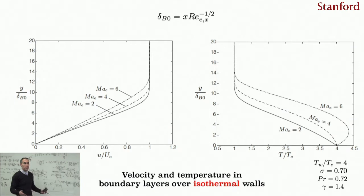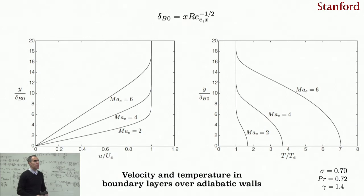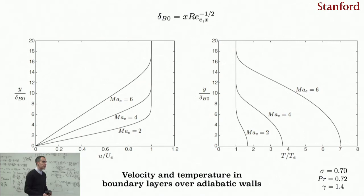Going back to the adiabatic case and varying the Mach number, the baseline boundary layer thickness delta_0 is not ideal since the boundary layer reaches 18 units at Mach 6. A better scaling uses a Reynolds number based on wall properties: Re_w,x = rho_e*u_e*x / mu_w, which accounts for density and viscosity variations with temperature.